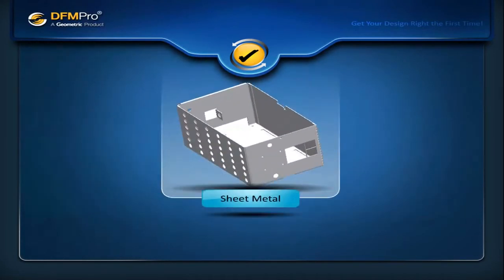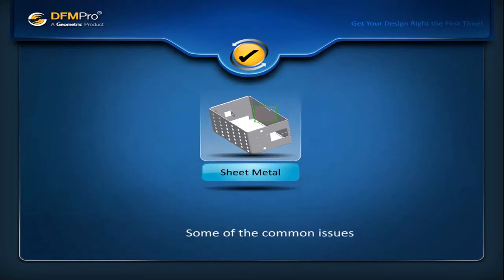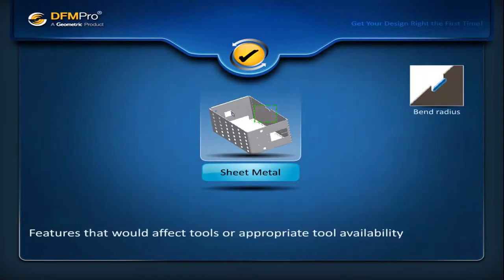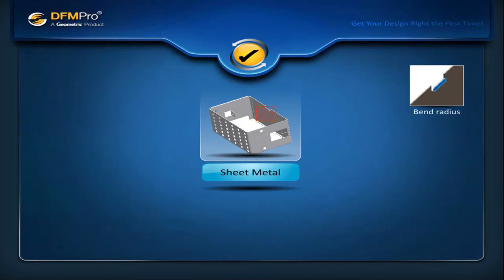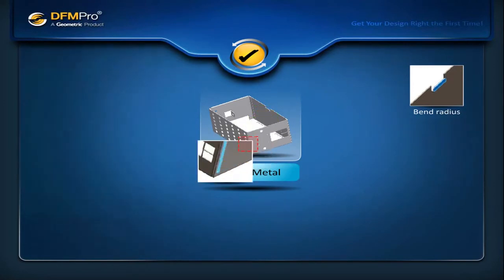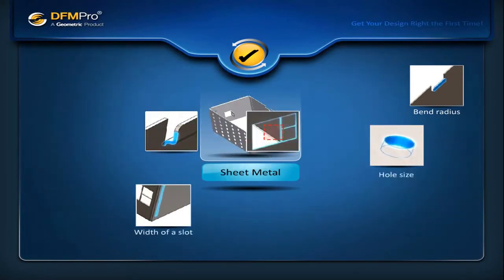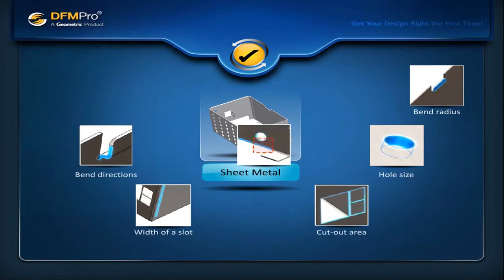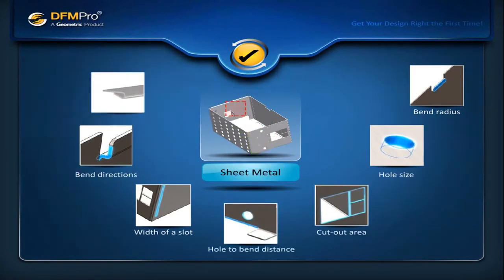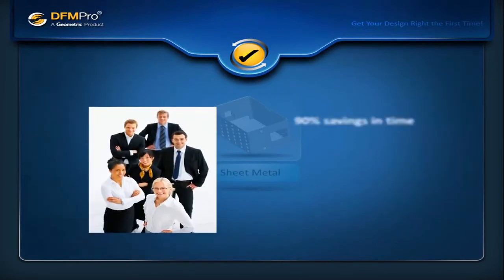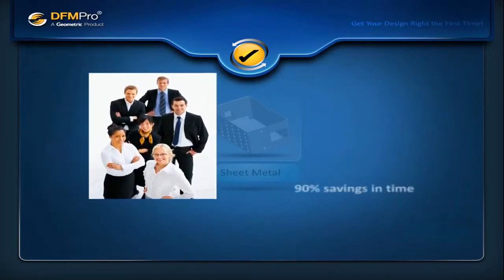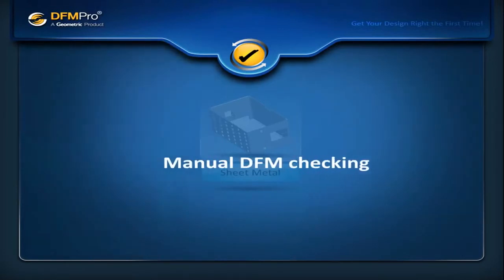The sheet metal module of DFM Pro checks for common issues like appropriate bend radius and features that would affect tools or appropriate tool availability to manufacture a particular feature. It also checks if features like slots, holes, bends and cut-out areas are not very close to each other. Using the DFM Pro sheet metal module, customers have reported saving more than 90% of the time taken to conduct DFM checks manually.